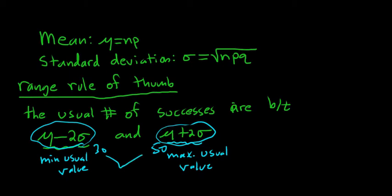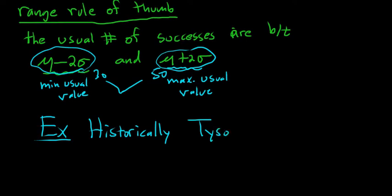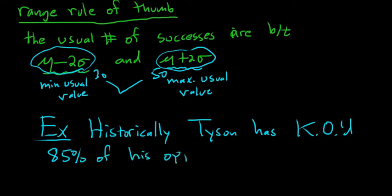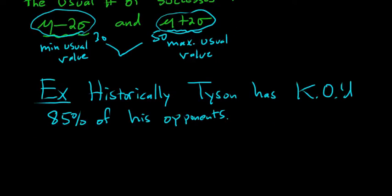Let's do an example. I actually don't have an example, so I'll just make one up. How about this? Historically, Tyson has KO'd—KO means knockout—85% of his opponents. Tyson used to be a boxer. I'm just making this up. I actually don't know if it's 85%.